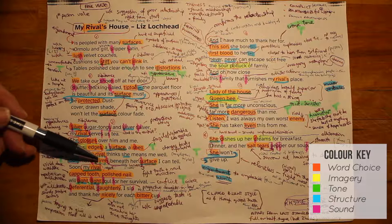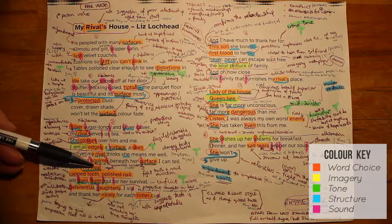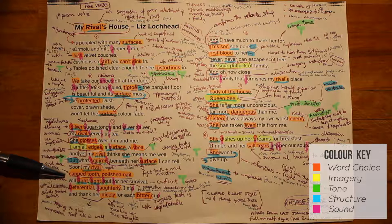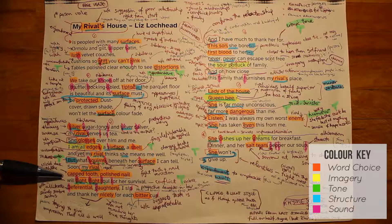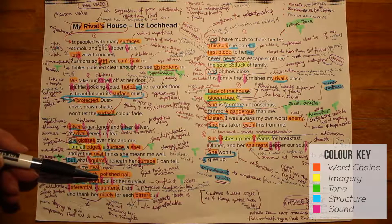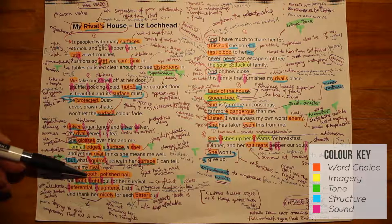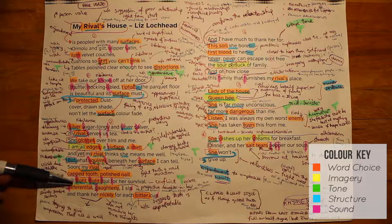The repetition of 'my rival' reminds us that there is some sort of contest going on. There's a very effective play on words here: the phrase fight tooth and nail means to really throw everything into a fight or battle, and this highlights how the persona feels threatened by the hostess. An interesting point is the use of the word capped to describe the tooth — suggesting a surface on top of it — and polished to describe the nail, which is nail polish on top of the nail. So we see again the idea of surfaces concealing something below. The persona fears the hostess will fight foul for her survival in this contest.